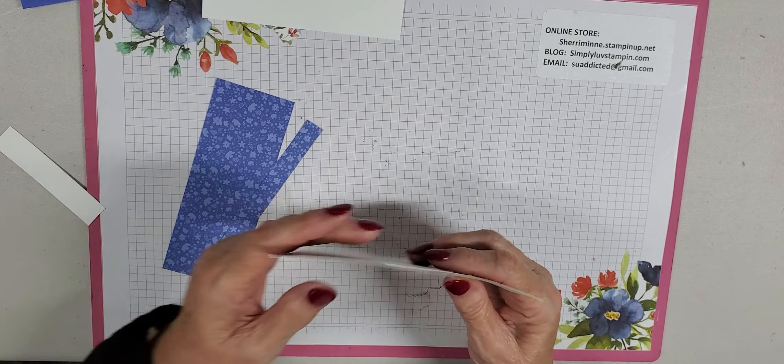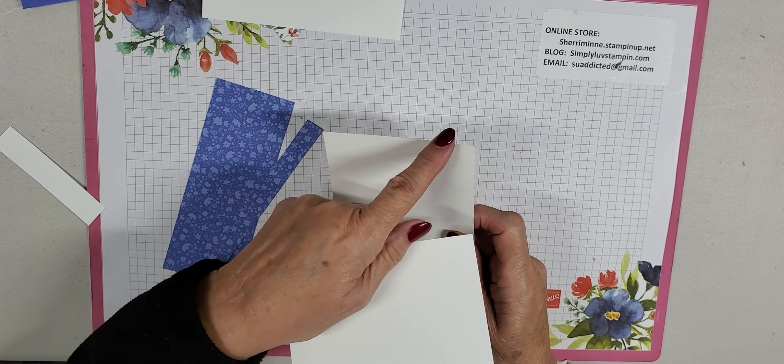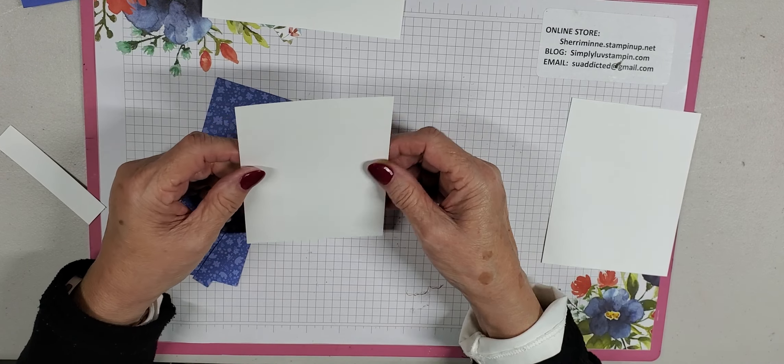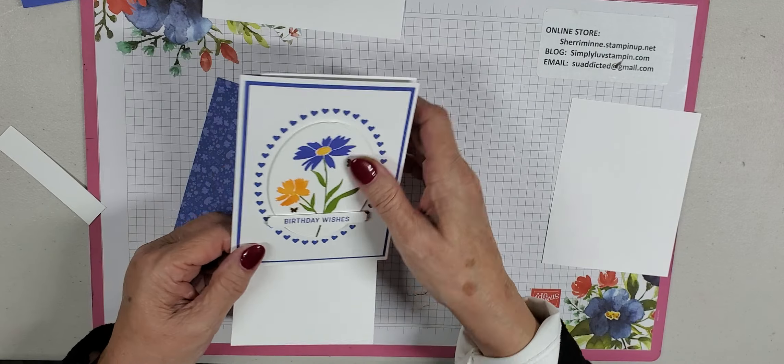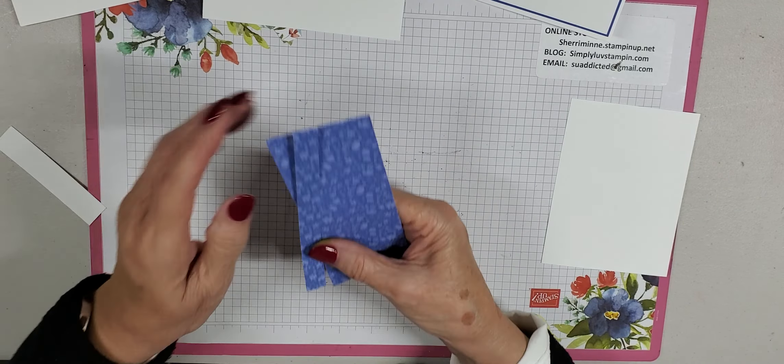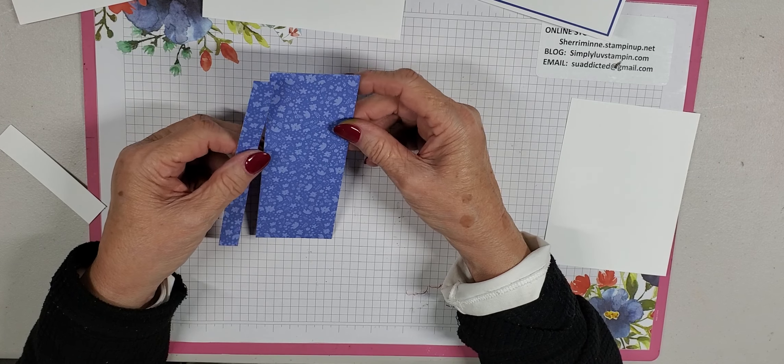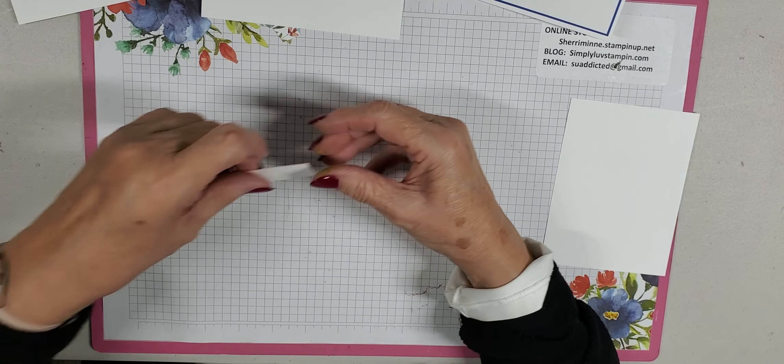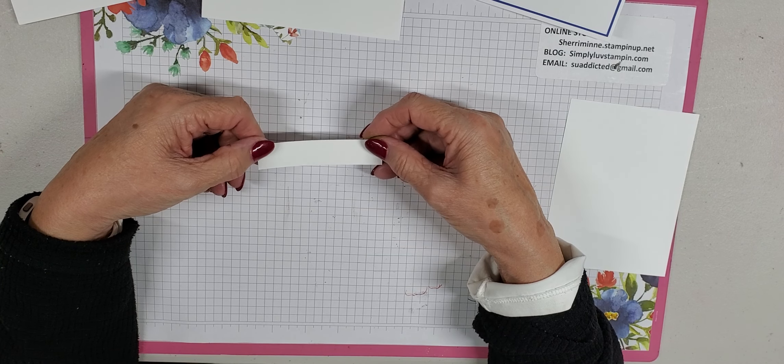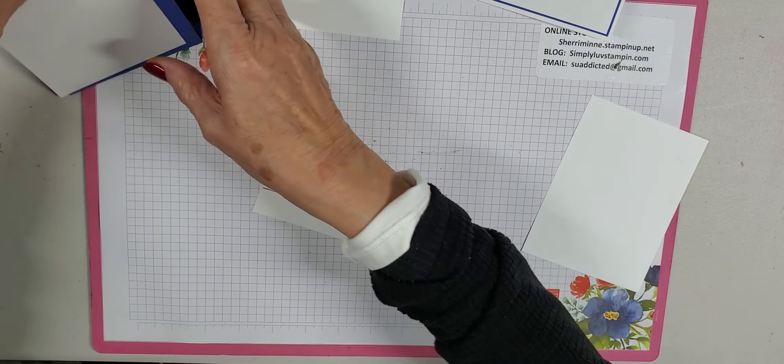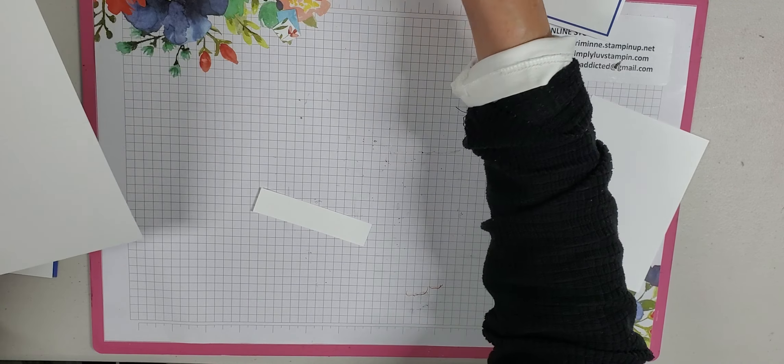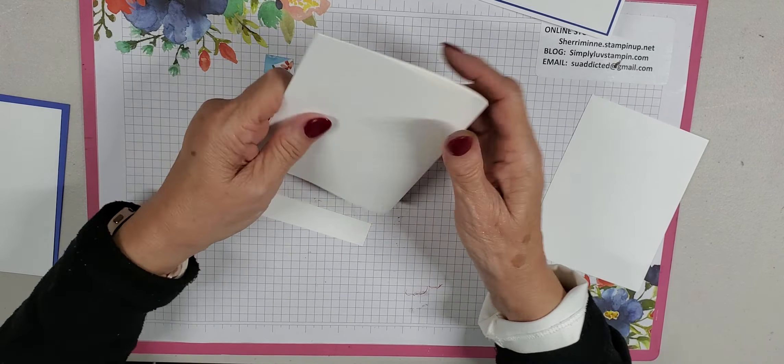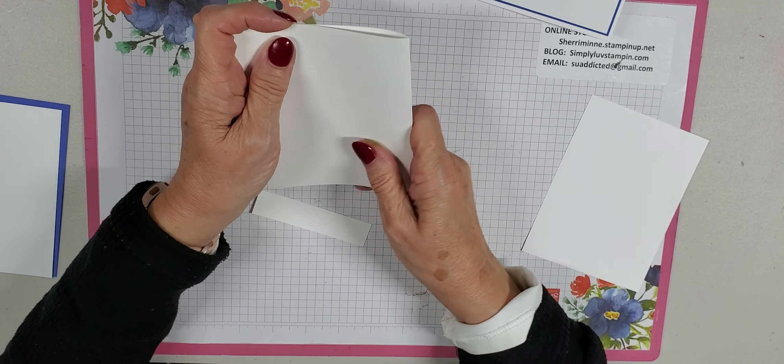You're going to have a piece of Orchid Oasis, four by five and a quarter. You'll have two pieces of regular basic white. One is four by five and a quarter. This is going to cut out your oval framelit. And then the one on your card that's going to go on your card here in the front is three and three fourths by five. You'll have some pieces of the six by six color designer series paper in the Orchid Oasis. And then you'll have another little tiny piece of basic white to stamp your greeting on. So that's really all. It's not a very hard card and goes together fairly quickly.